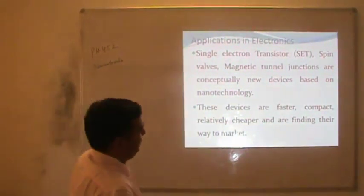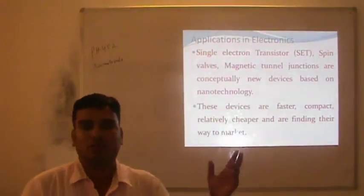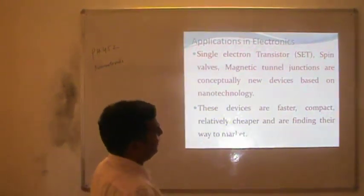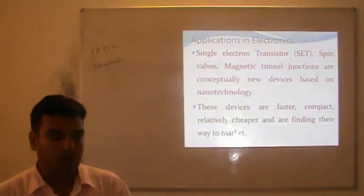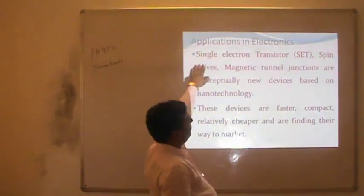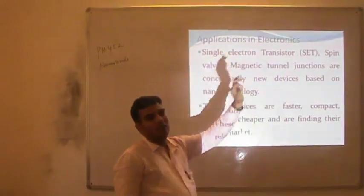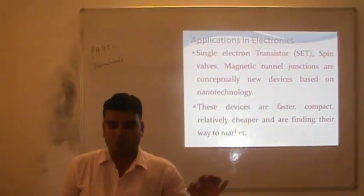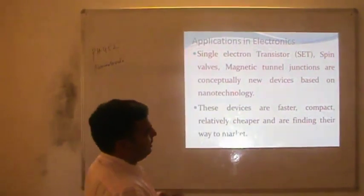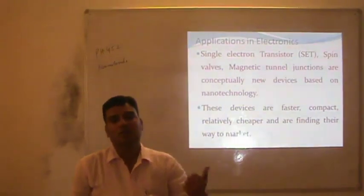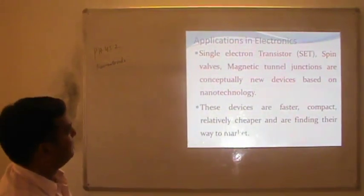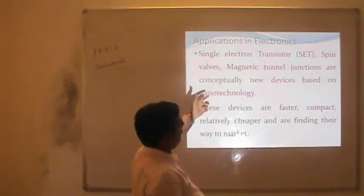There are a number of applications of nanotechnology in electronics; we will talk about a few important ones. The first one is the single electron transistor, where we talk about the quantum dot. Conceptually, even a single electron passing through a quantum dot behaves as a transistor whose efficiency is approximately a hundred to a thousand times better than the transistors we are using nowadays. Spin valves and magnetic tunnel junctions are conceptually related devices based on nanotechnology.